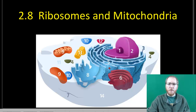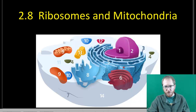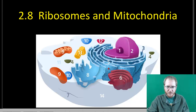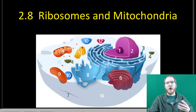Ribosomes usually appear as just small dots. In pictures, they'll be attached to the nuclear envelope sometimes, or attached to the endoplasmic reticulum, the ER. The rough ER is what we call the stuff that has these little dots — the ribosomes — on it. You'll also see ribosomes that are just floating out there. Those are called free ribosomes, and they can be found throughout the cell, not just attached to something.